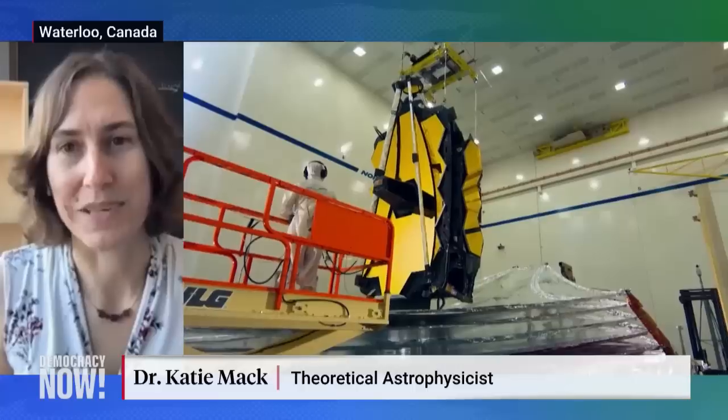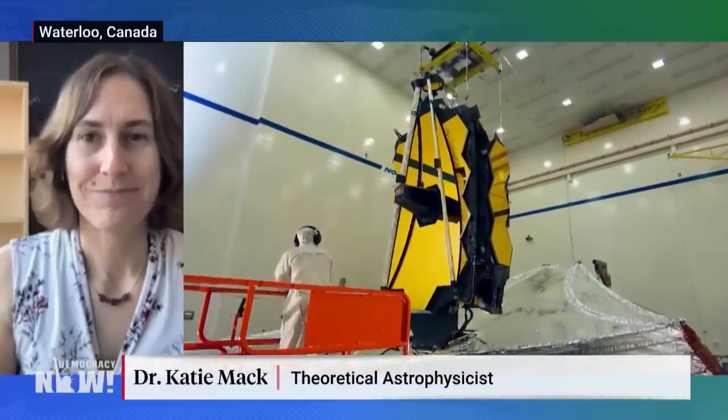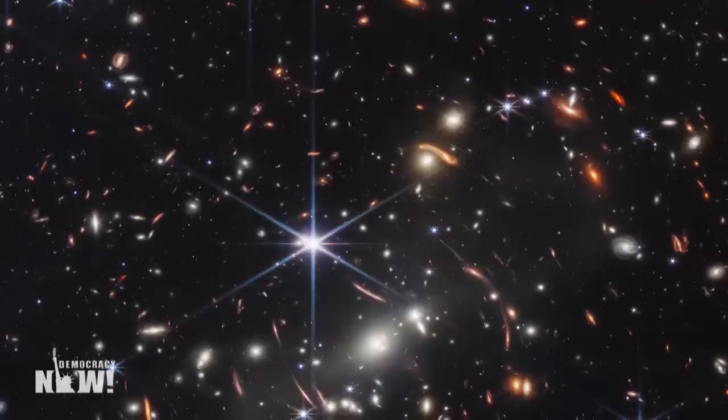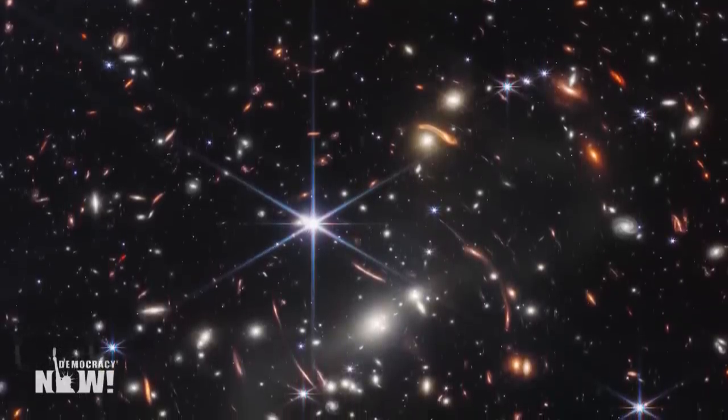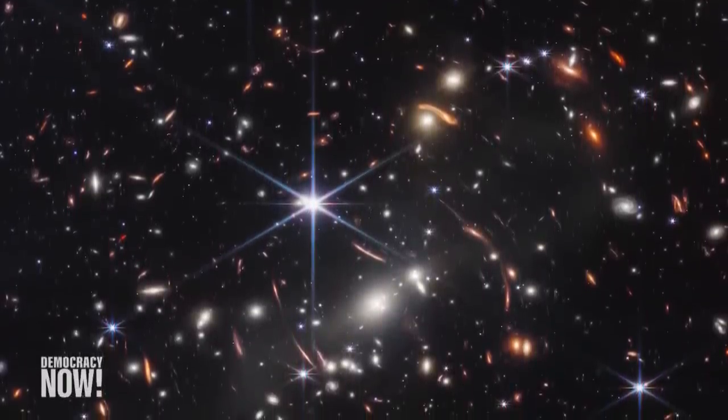Let's turn to the first full-color image returned by the telescope. And for a radio audience, you can go to our website, democracynow.org. But I know that Dr. Mack will be very descriptive in explaining. You have, on Monday, President Biden unveiling this unprecedented view of the cosmos known as a deep-field image, as you've said, showing these thousands of galaxies, some 13 billion years old, formed a few hundred million years after the universe formed in the Big Bang. And if you can even explain the Big Bang. But as we see these images, describe that first picture.